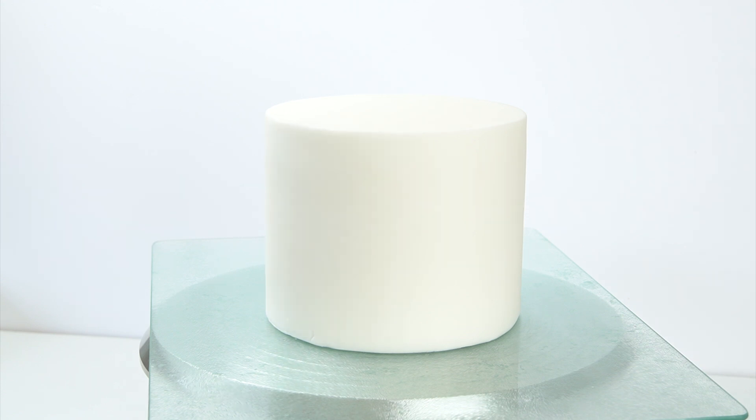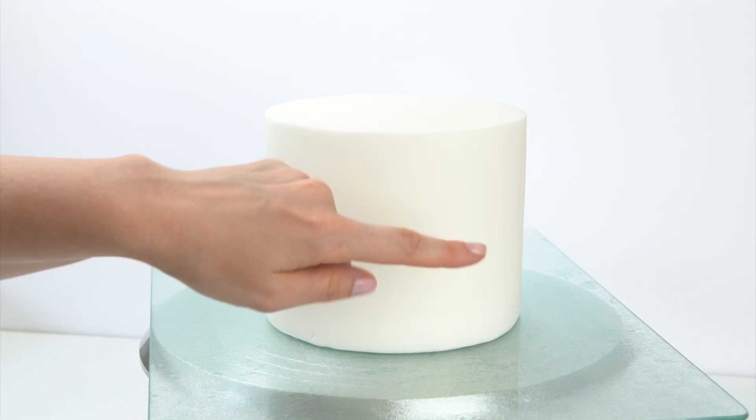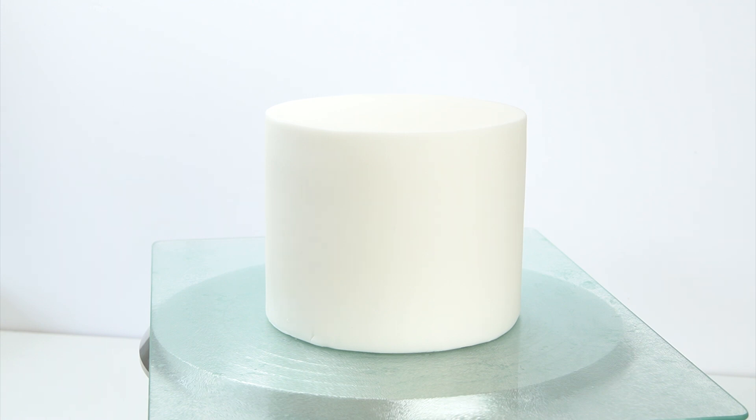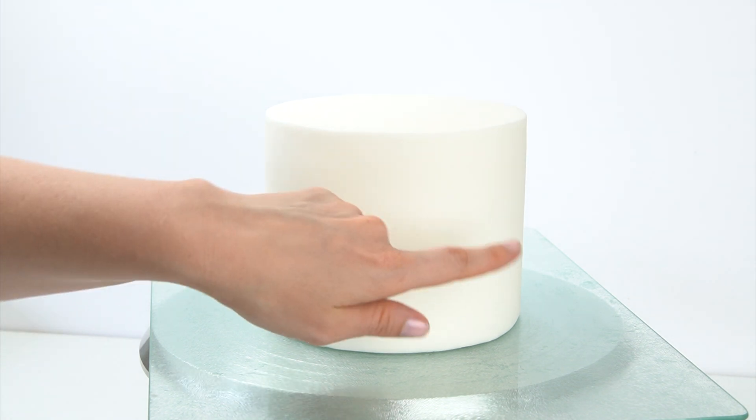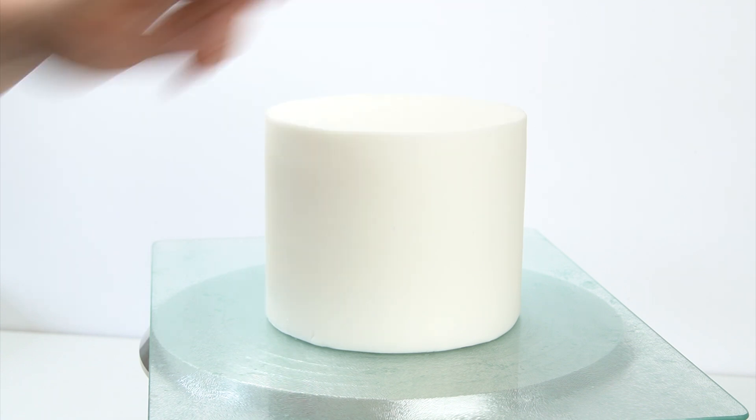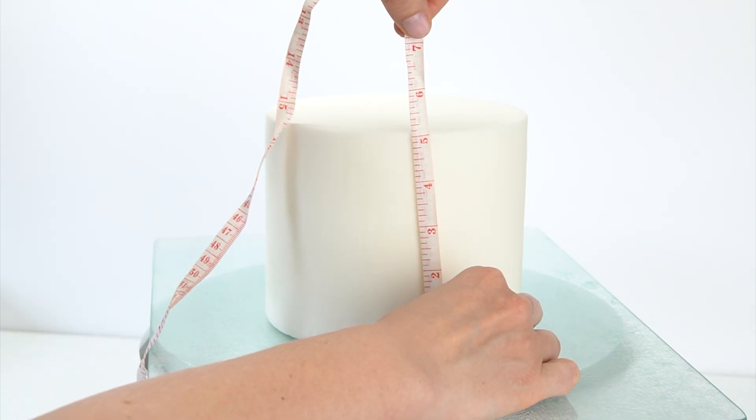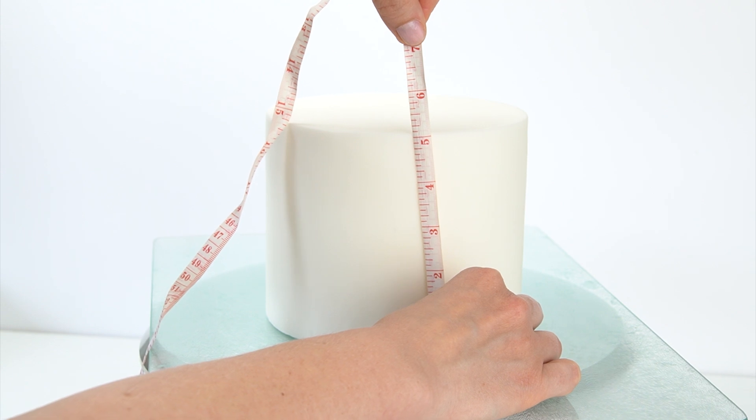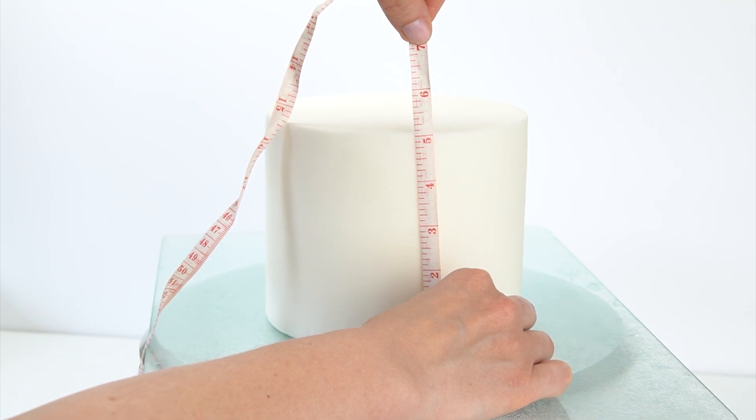Now our cake has been covered, we need to work out how big a piece of fondant we need to create to wrap around the outside. It's entirely up to you, you could only have the wrap coming up halfway on your cake. I'm going to have mine coming up so it's slightly higher than the cake itself. If I measure the height and see that it's just over five inches.